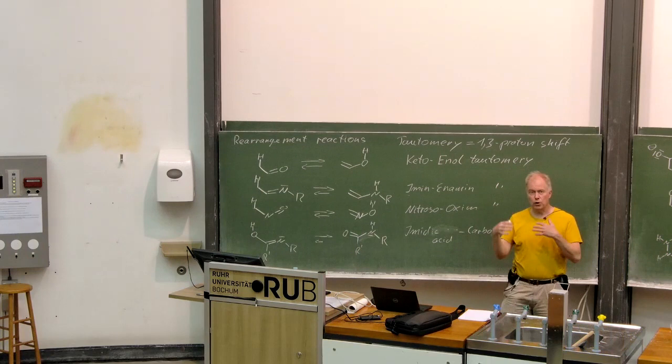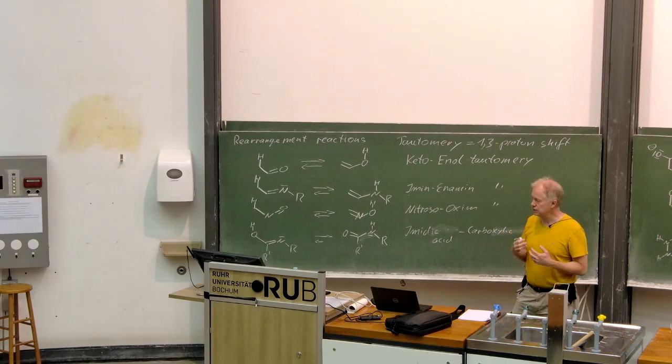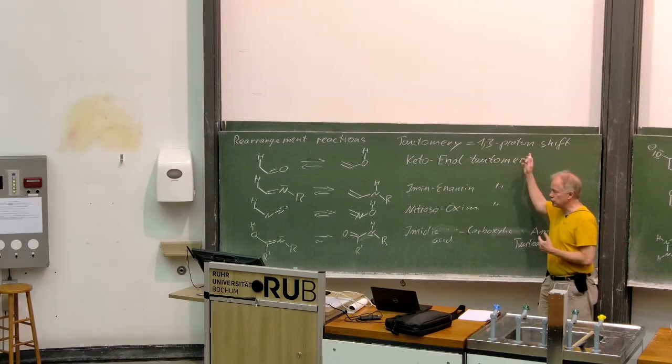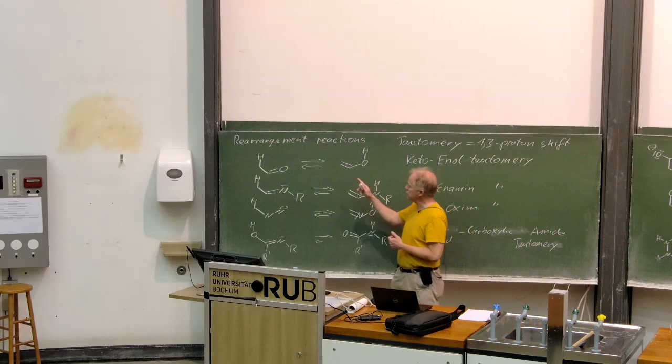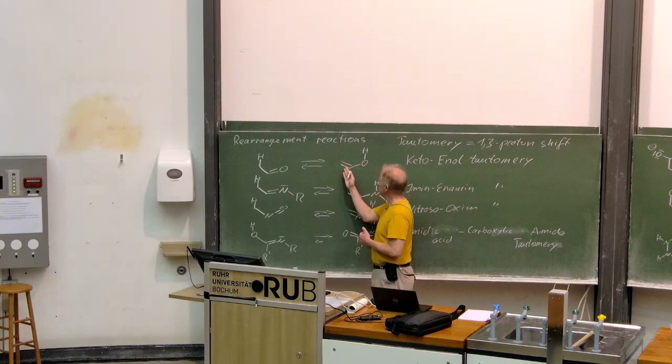Four different tautomeries which are in fact very similar. Of course, the tautomerie is a 1,3 proton shift and the most renowned example is the keto-enol tautomerie, a ketone in equilibrium with an enol.